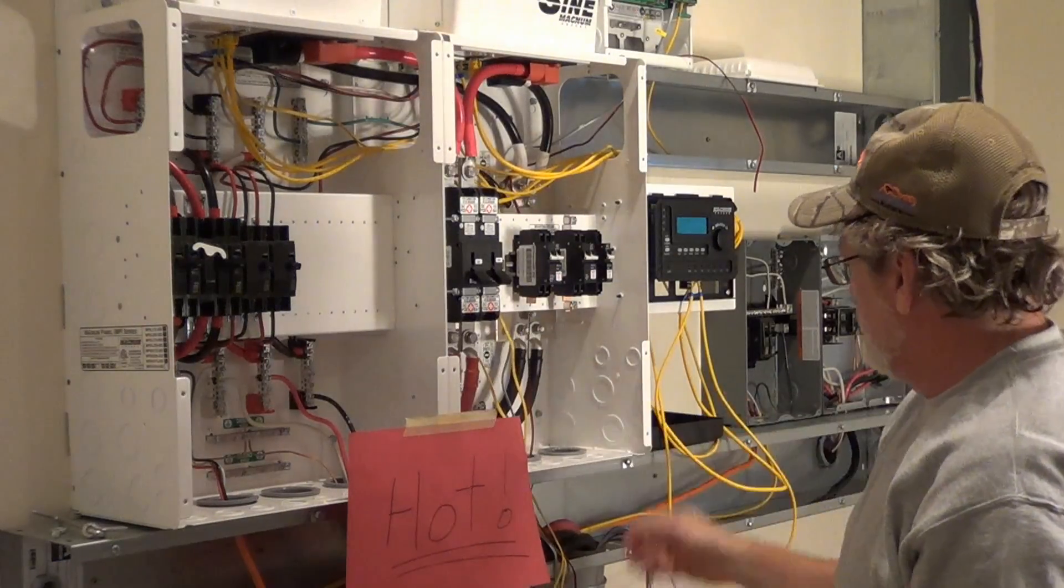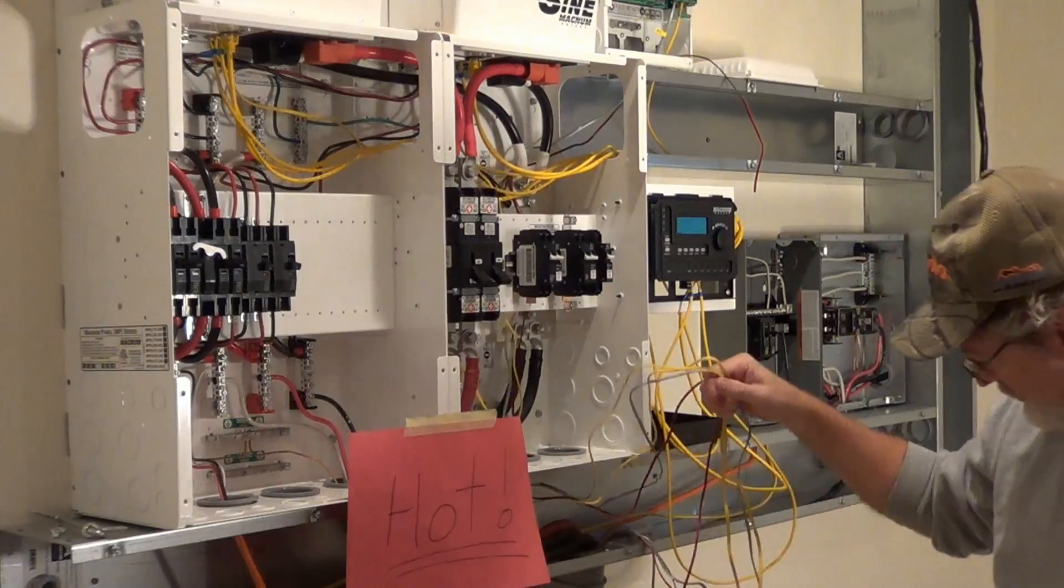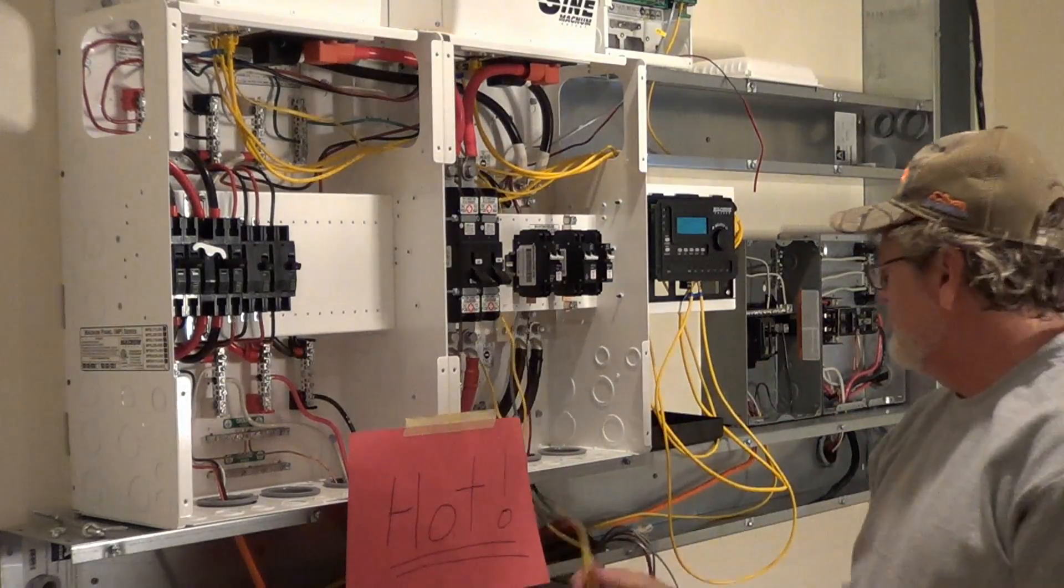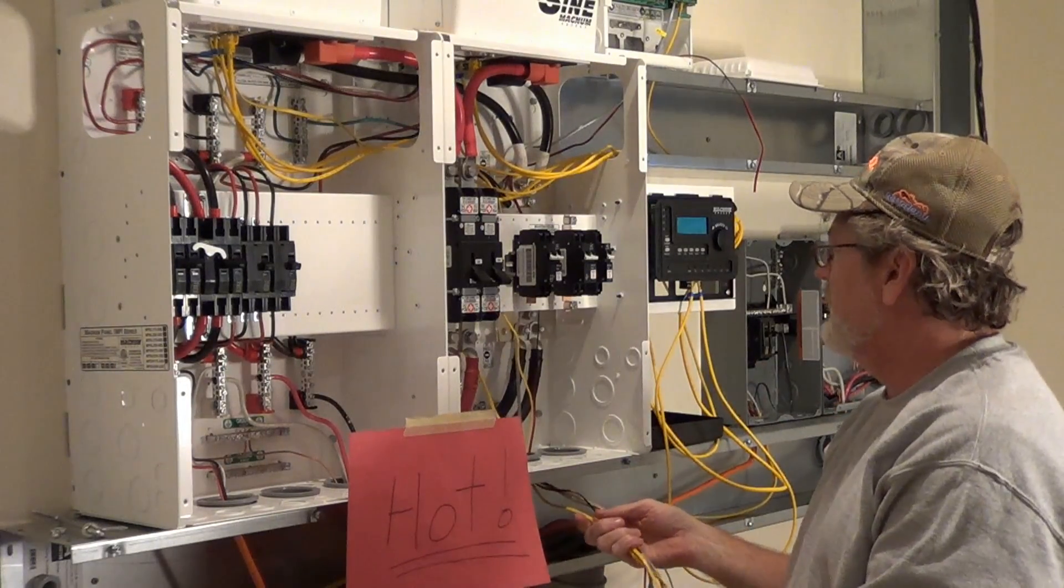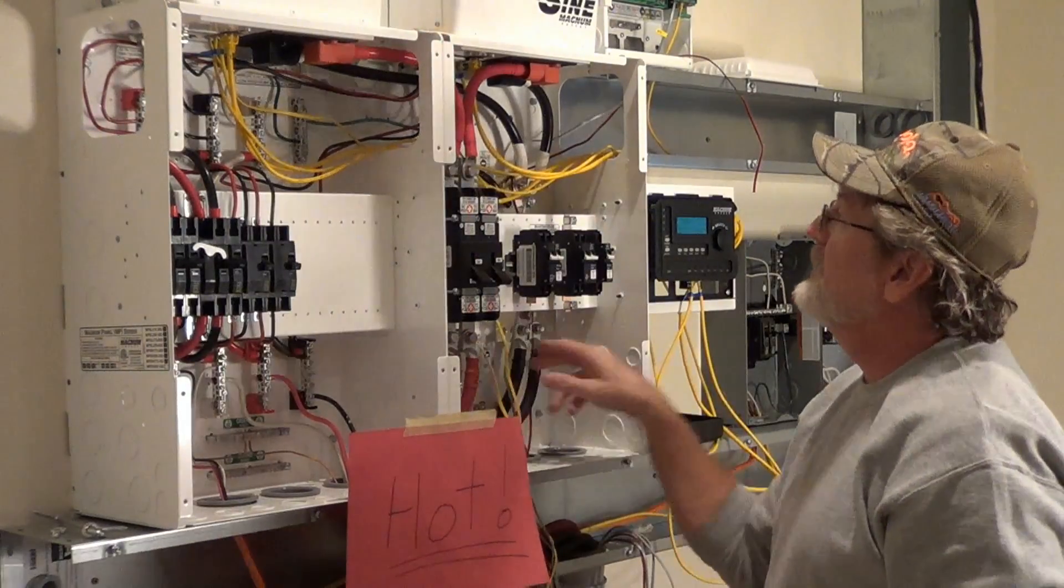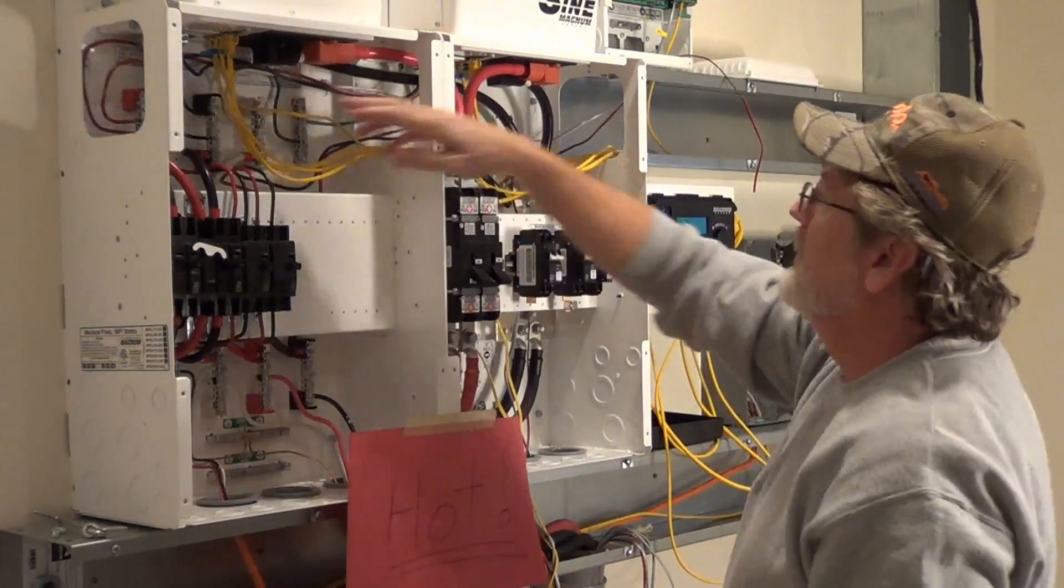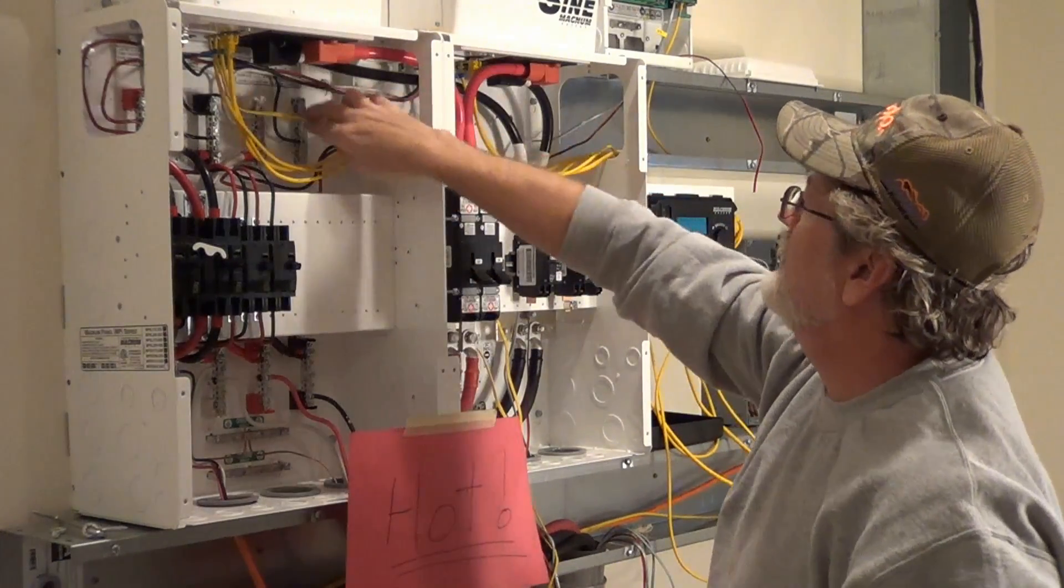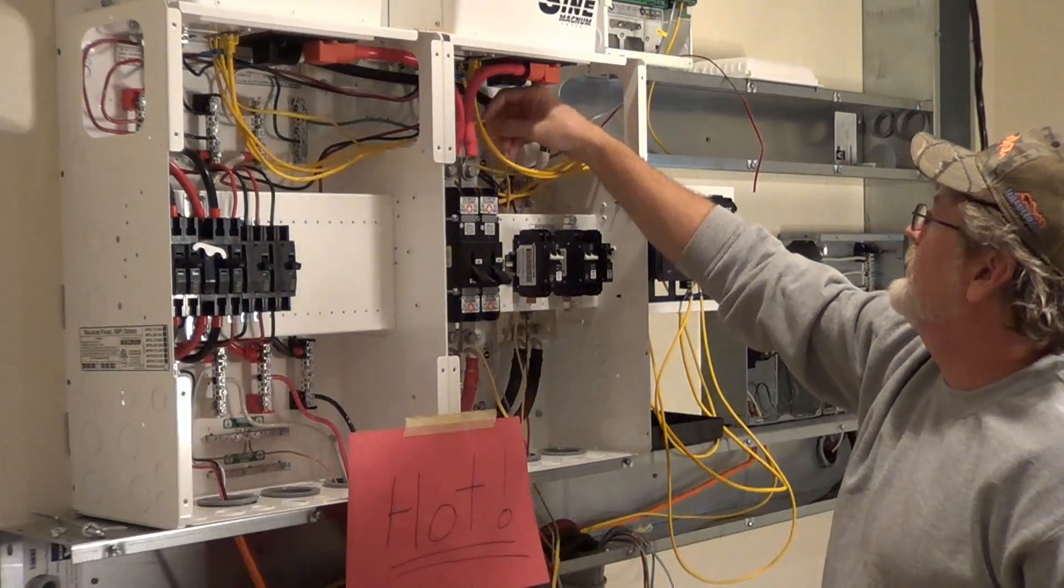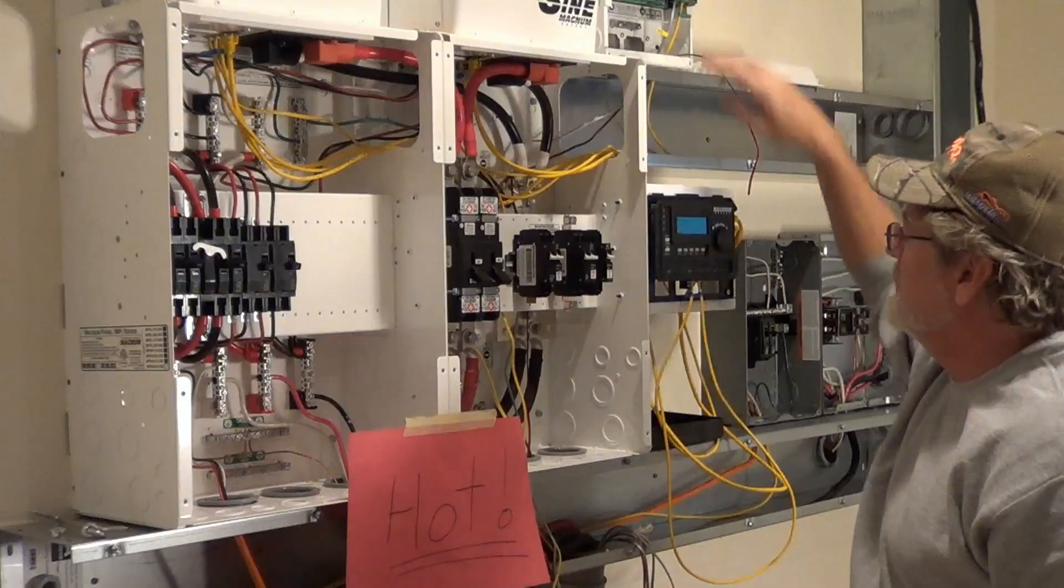Okay, and then I've got my battery temperature sensors run up from the battery, which I've got to hook them up down there yet, but they come up from the battery box. I've got three of them. I think I only need one on the master inverter, so I'm not sure if I'm going to leave all these plugged in or not, but they're all plugged in. Here it is, battery temperature sensor, and this is the third one going over to the PT100.